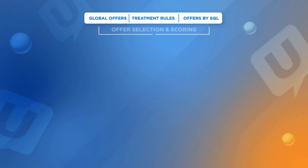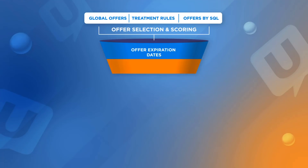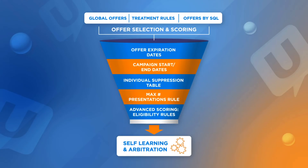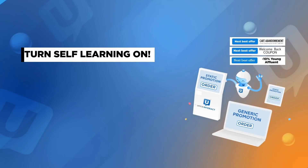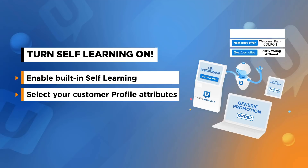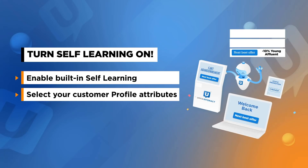Once you have a good set of stable offers and smart segments, it is very easy to turn on the built-in self-learning and start using the insight from your response history data. All you need to do is some configuration changes on the user interface. First of all, enable self-learning for your interactive channel. Then go ahead and select the predictor profile attributes to use in your model.